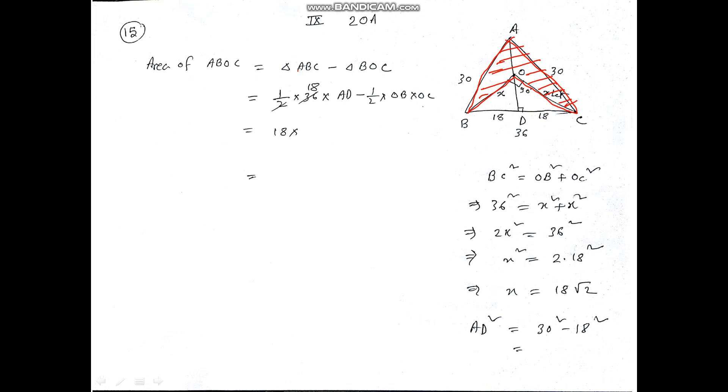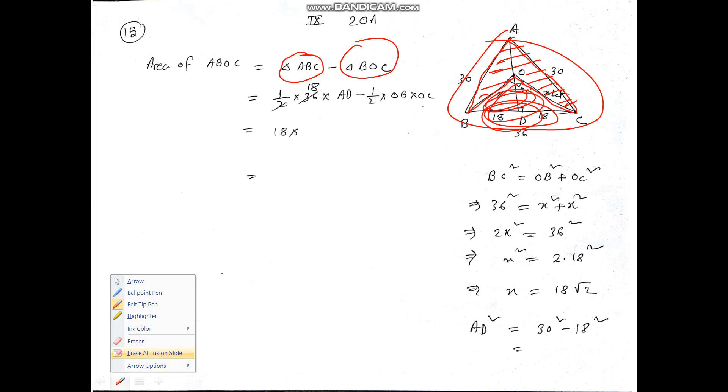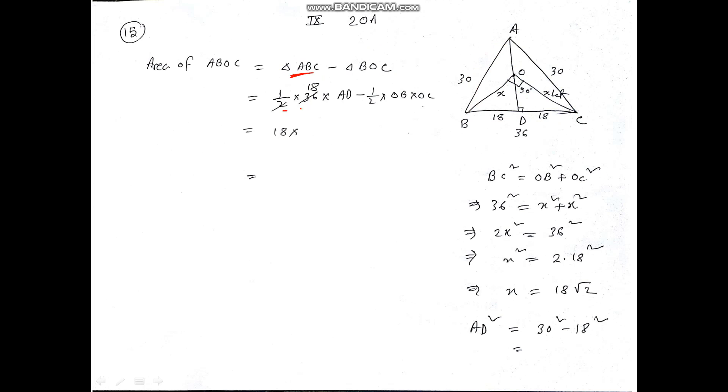This area equals the area of ABC, the total area, minus this triangle's area. ABC area is half into base into height, so half into 36 into AD, minus half into OB into OC. OB and OC have the same length, so to get OB and OC length we have to apply Pythagorean theorem.